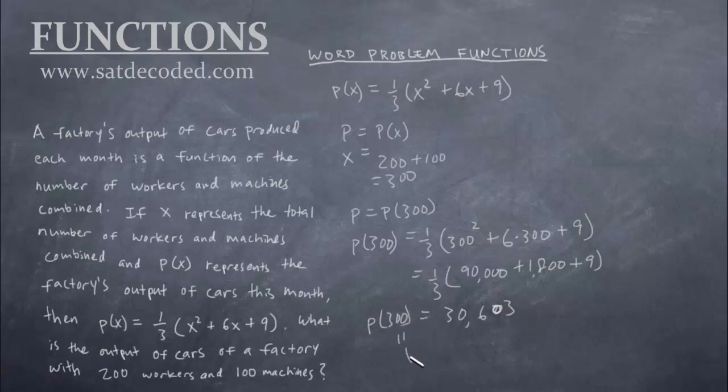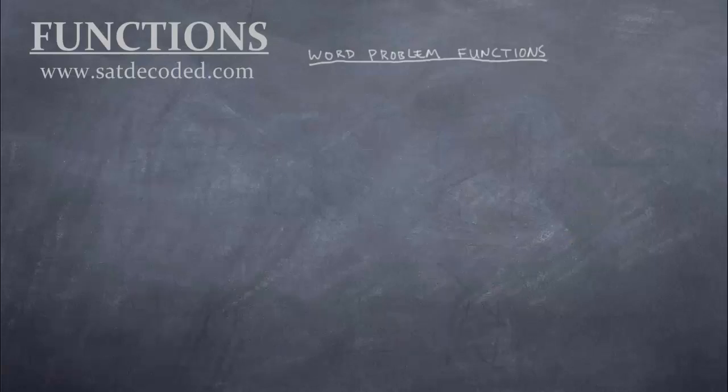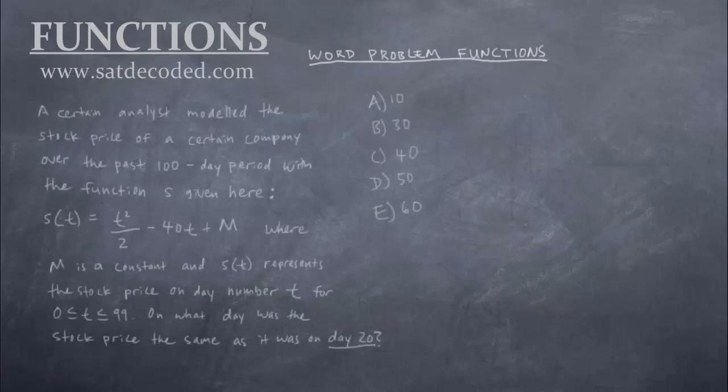So p(300) = 30,603. And remember, that's really the same thing as p. And p(x) or just p represents the factory's output of cars this month. And the question is asking, what is the output of cars? So the output of cars this month is 30,603. That's our final answer. Just don't get p(x) and p confused. p itself is not really a variable, it's more of the entire function. Let's try one more question.